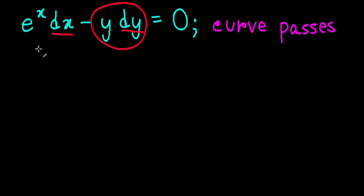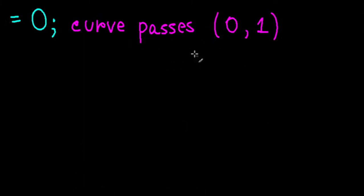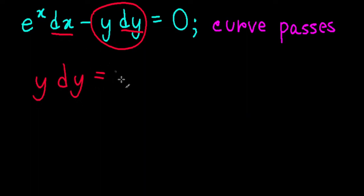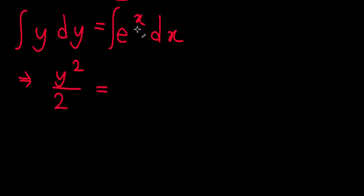We also have an initial condition — the curve passes through (0, 1), which is another way of saying when x equals 0, y equals 1. First thing we do is take the term to the other side. We get y dy equals e to the power x dx, which is definitely a separable equation with y's and x's on opposite sides.